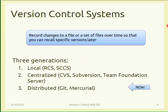Version control systems were born to record every change to a file or set of files over time, from the creation of the project up to the last day, so that you can recall a specific version — even the first one from eight years ago — at any moment. We had three generations in history: local version control systems, centralized version control systems, and now we are moving to distributed version control systems like Git, which you will use to handle all your projects for the exam.